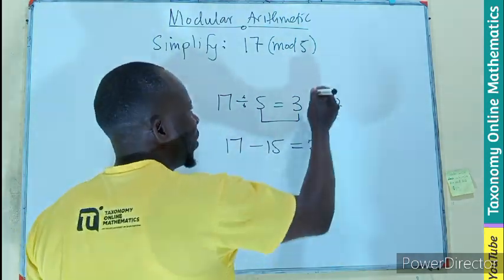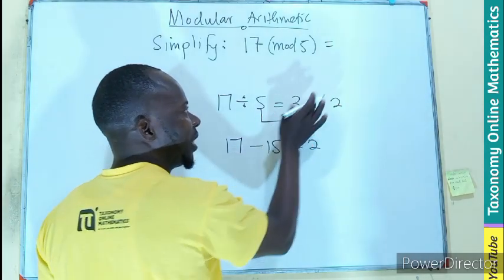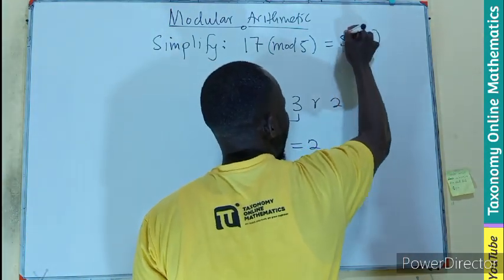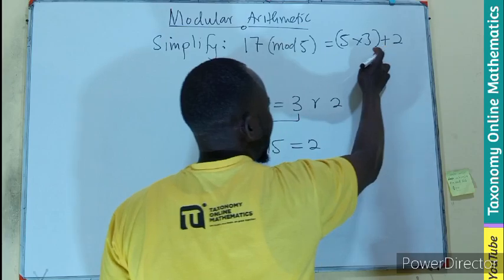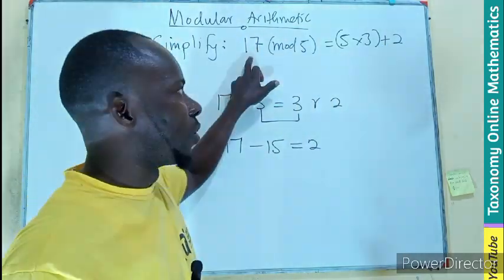So here we only write our multiplication here as in 5 times 3 plus 2 giving rise to 17. The number in front.